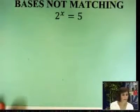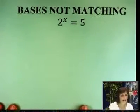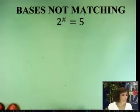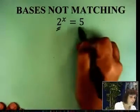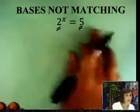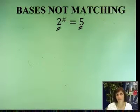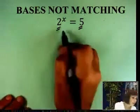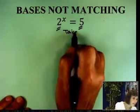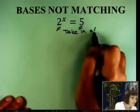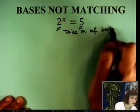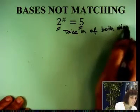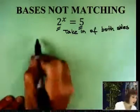Alright, now what happens when the bases don't match and you cannot make them match? Here's a 2, here's a prime, here's a 5, that's a prime. There's no way I can break them down and make them have a common base. This is what you do. Take ln of both sides. You can also do that with log. Watch, ln 2x, ln 5.